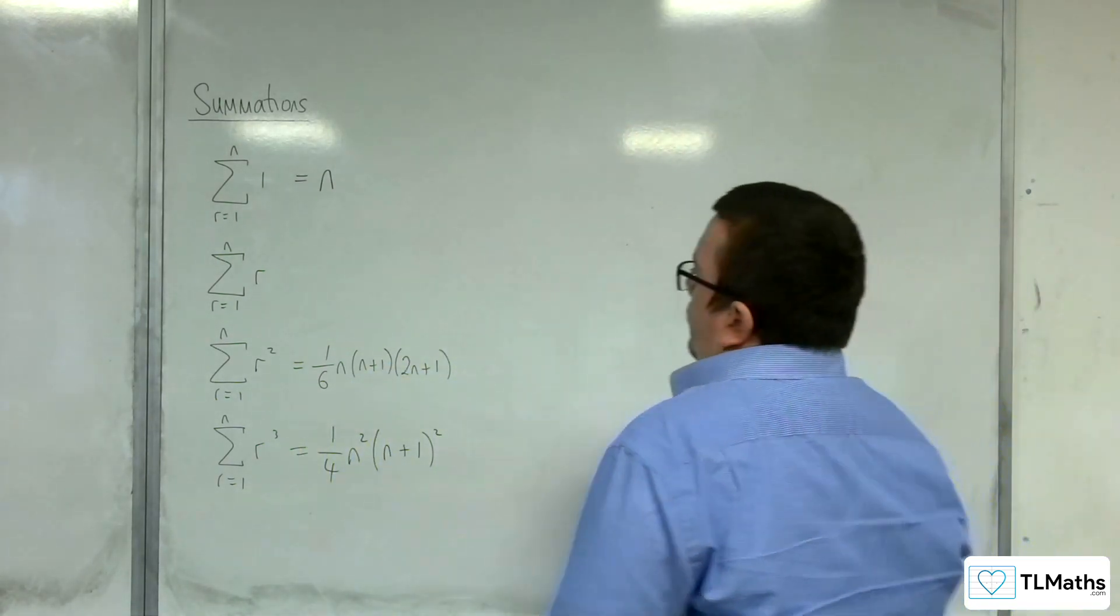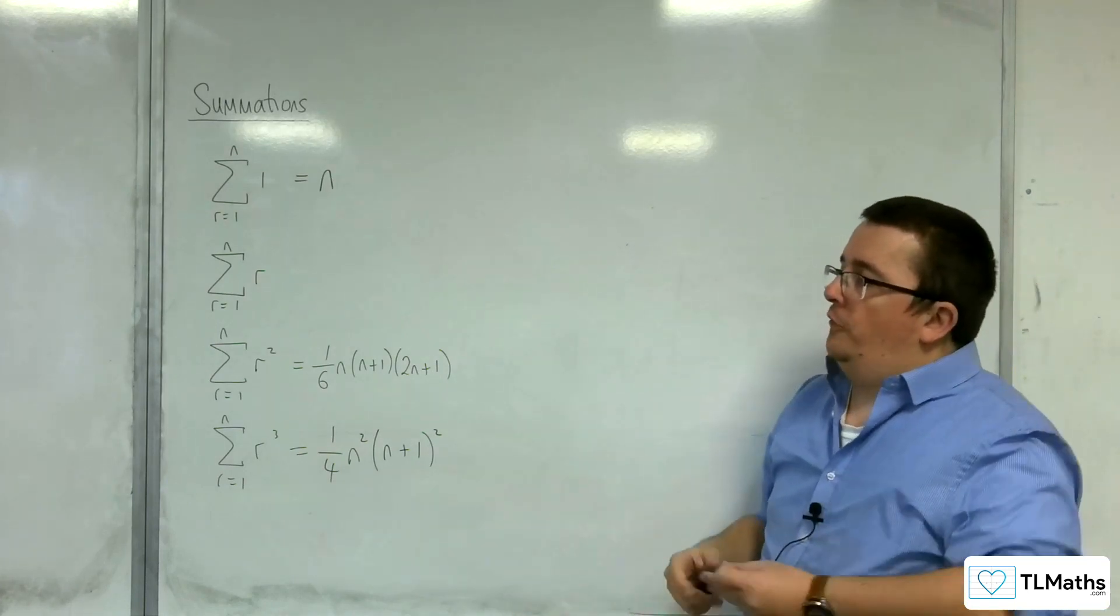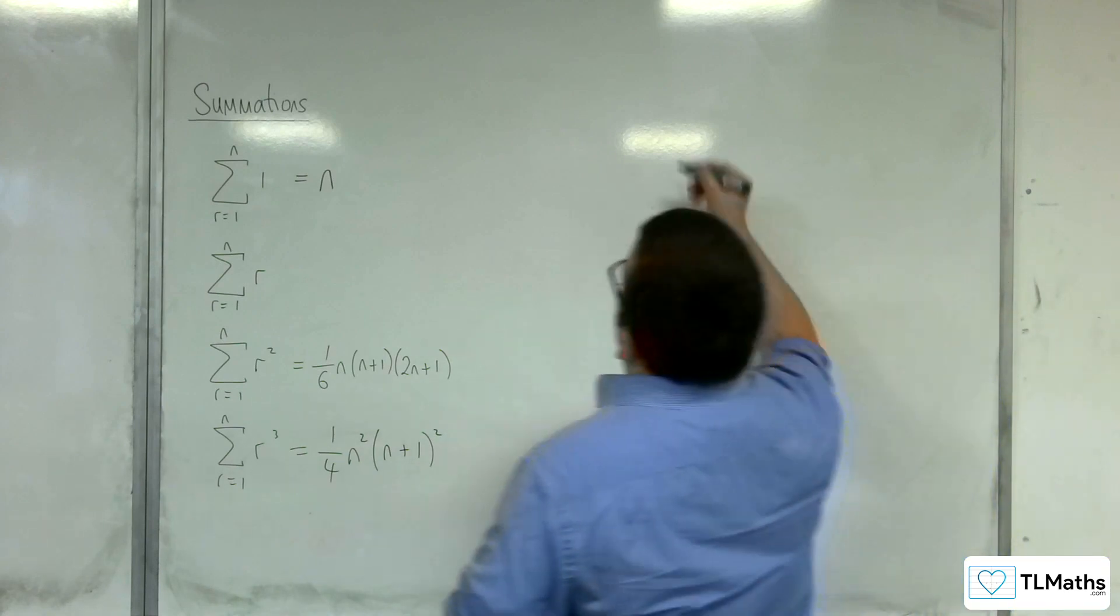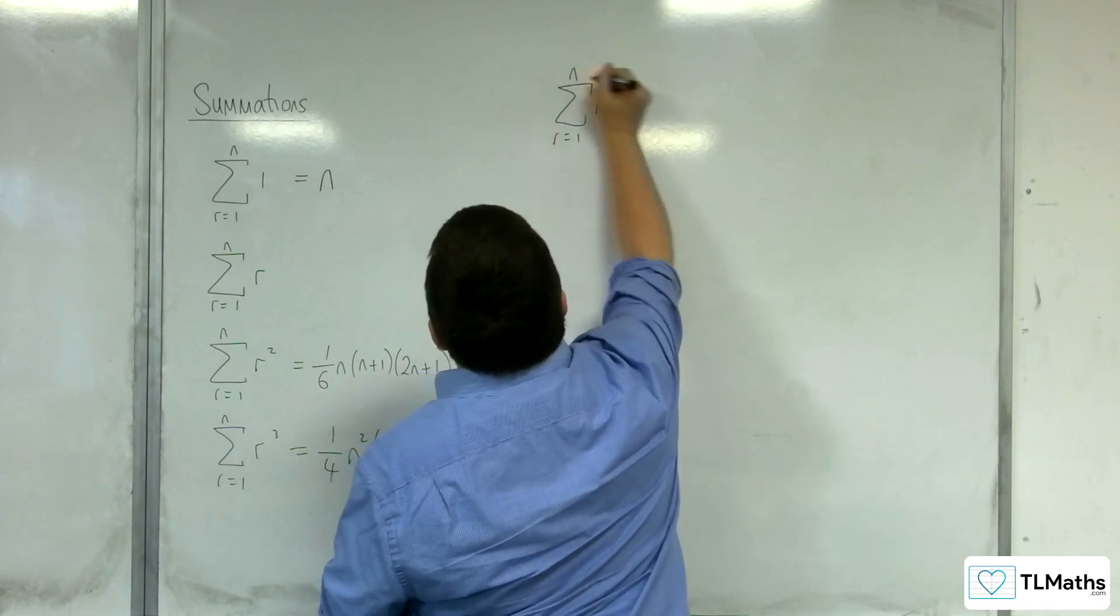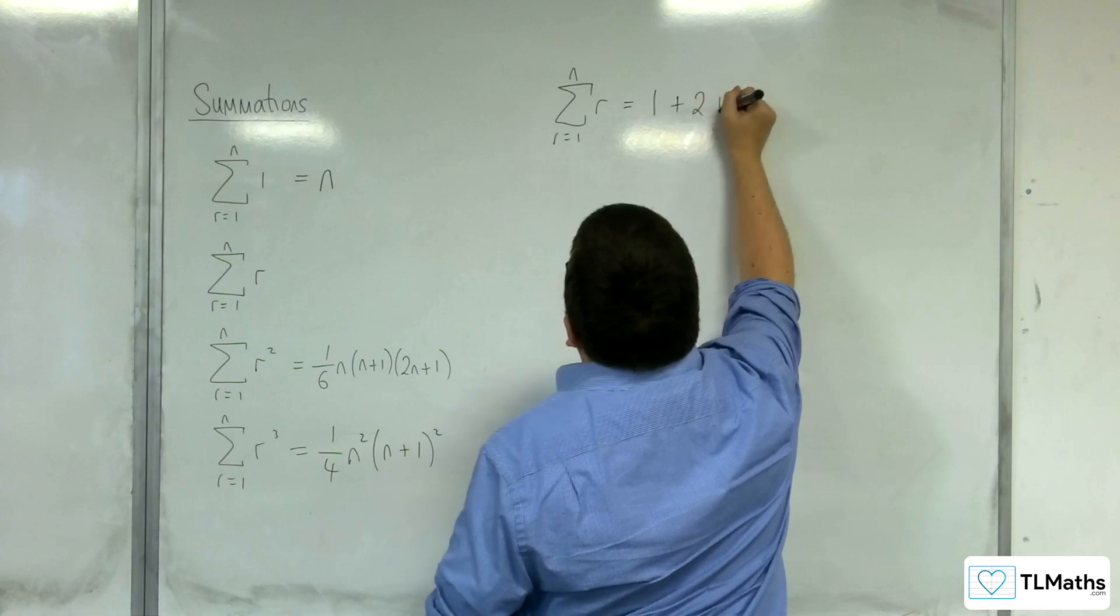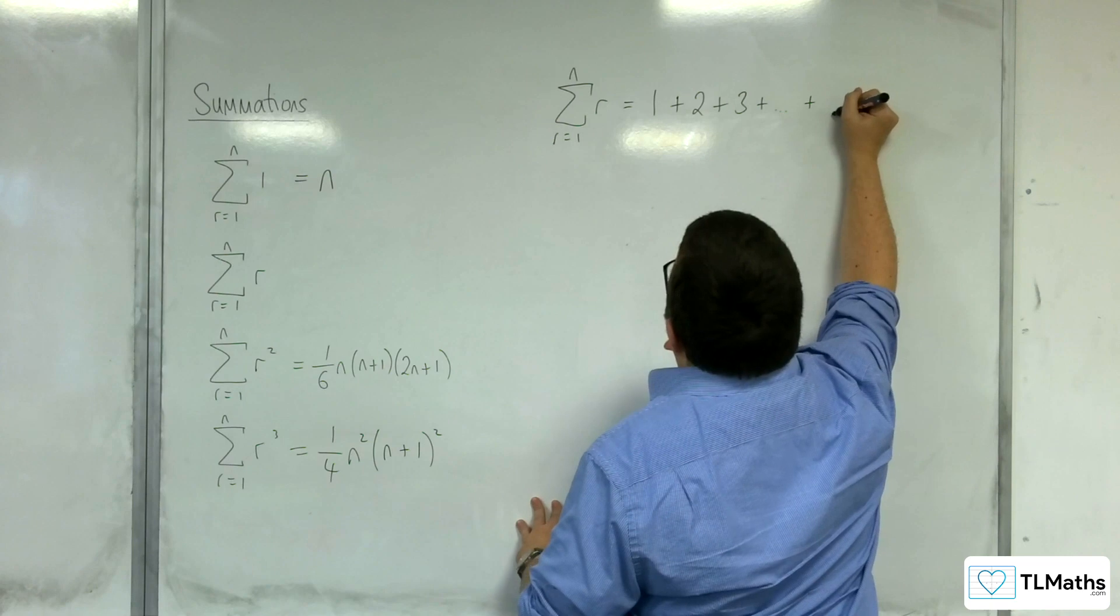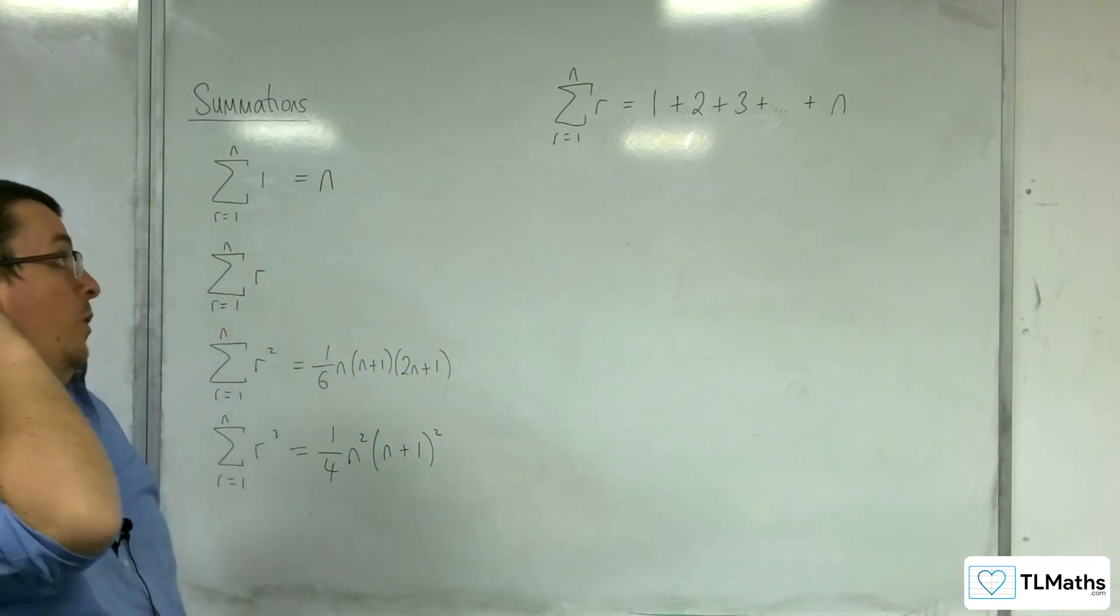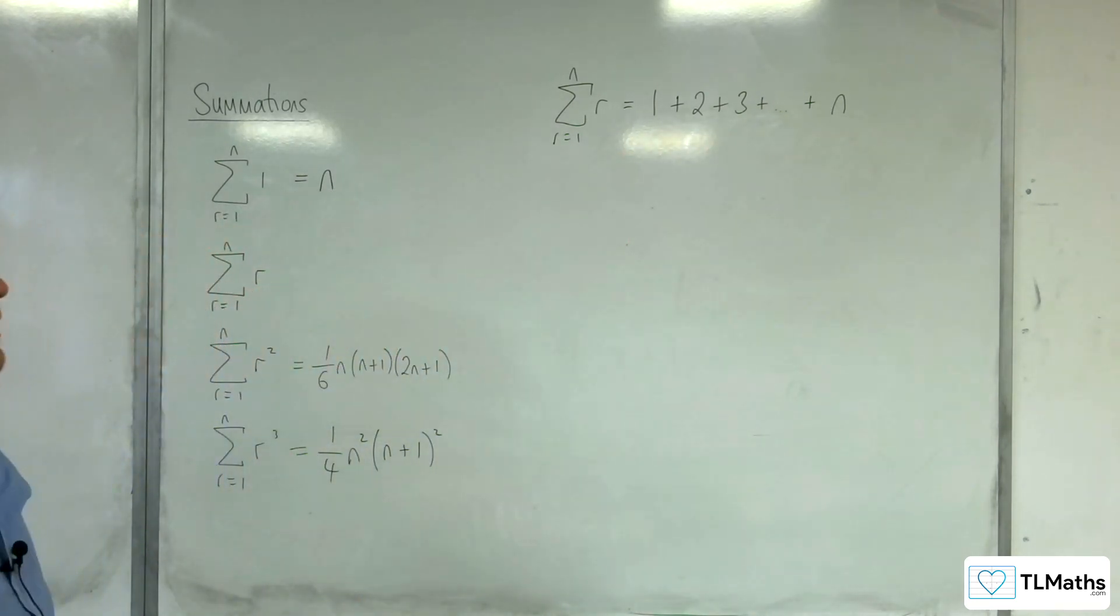As for the second one, the sum from R is 1 to N of R. Let's take a look and see what this is. The sum of R from R is 1 to N, so we substitute in 1 first, then 2, then 3, then 4, then 5, then 6, all the way up to N. So this is what we need. We need an expression to represent that.